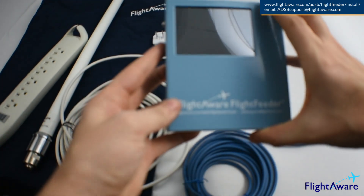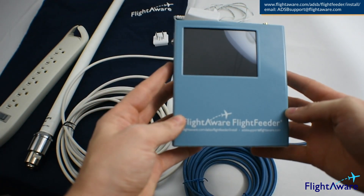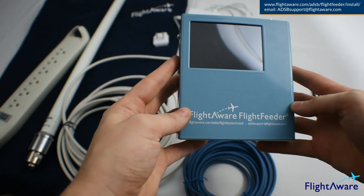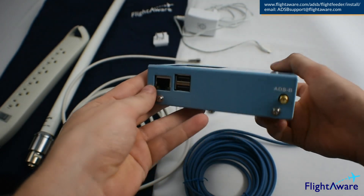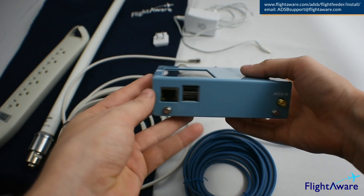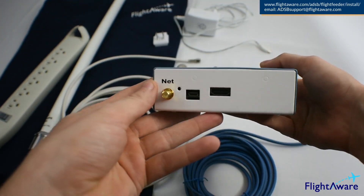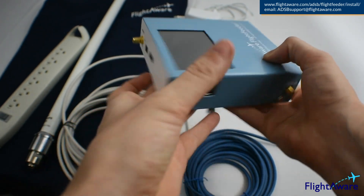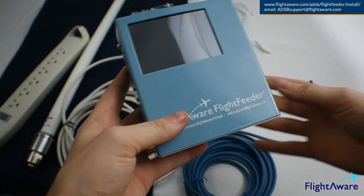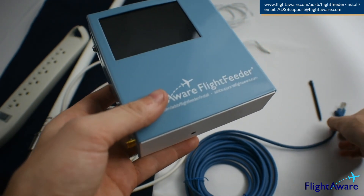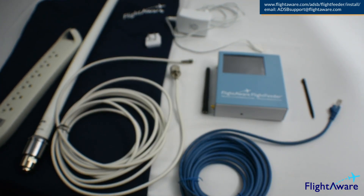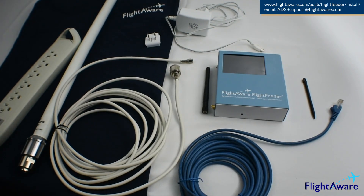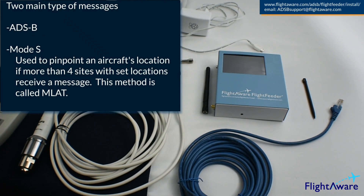Let's start with the main part, the flight feeder. Inside are several circuit boards that take the signal received by the antenna, translate the signal into a digital stream, and then send the data to FlightAware. There are two main types of messages received by the setup: MODES and ADS-B signals.